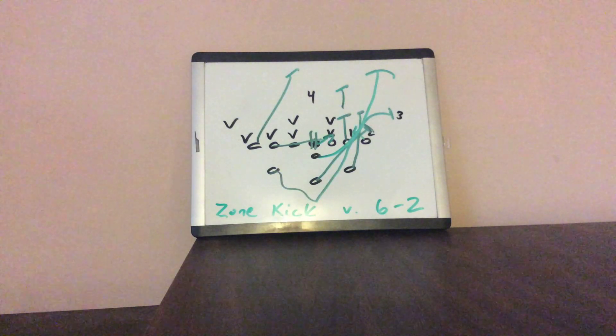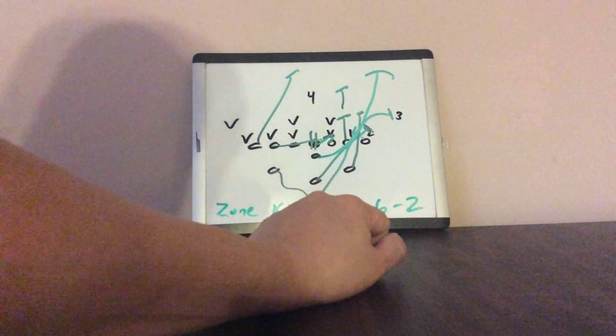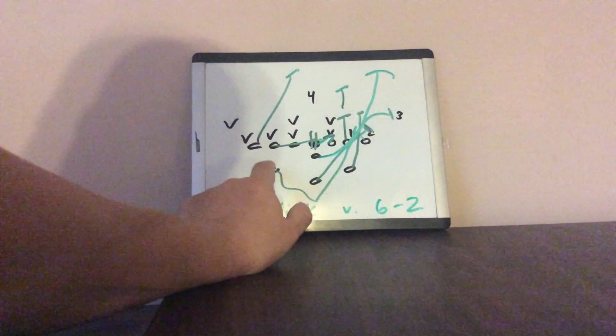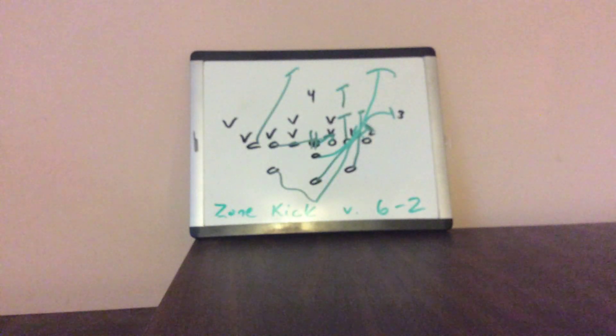And it makes it better than zone option because when on zone option, the A-back has to kick the run support. And a lot of times when he sees the motion on zone option, he flies up and kicks it out anyway.